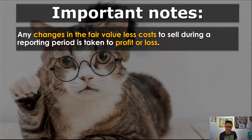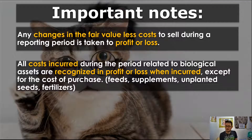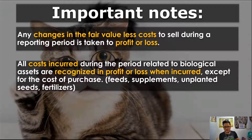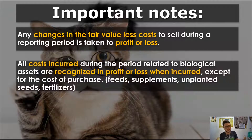Very important: changes in fair value less cost to sell — meaning beginning FVLCTS versus ending FVLCTS — if these differ, the difference is profit or loss, which we call gain on changes in fair value. Next, all costs incurred during the period related to biological assets are recognized in profit or loss when incurred, except for the cost of purchase. Things like feeds, supplements, unplanted seeds, fertilizers, pesticides — all of these used for agricultural activity shall be charged to expense. If you hired someone to clear land, that is salaries or wages expense.